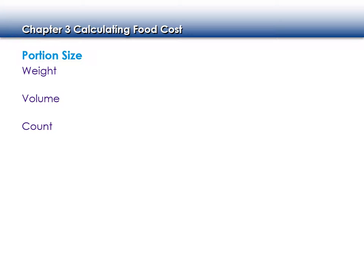An example of portion size by weight: a 16-ounce ribeye steak, or 4 ounces of salad greens. Volume is primarily liquids — an 8-ounce cup of orange juice, or a pint of beer needs to be 16 ounces.